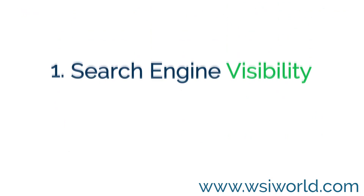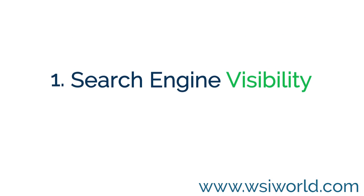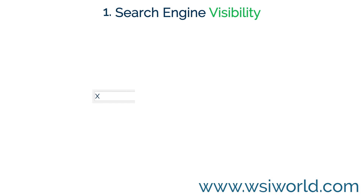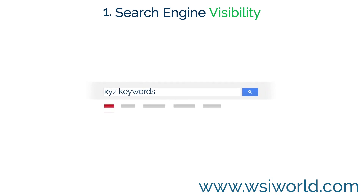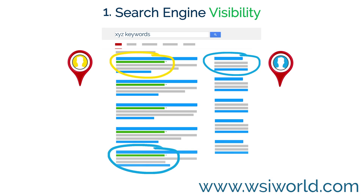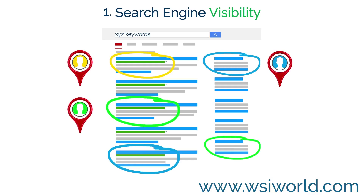One: search engine visibility. The first step is to identify who your online competitors are. Who is constantly achieving the best visibility across the search engines? Who has a presence on third-party websites as well as their own?